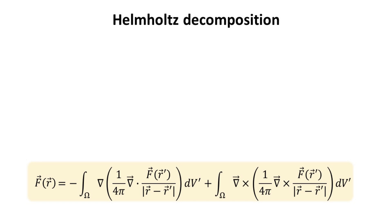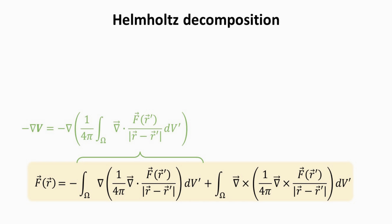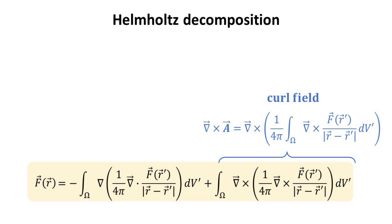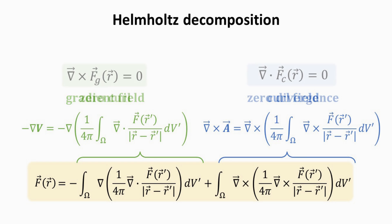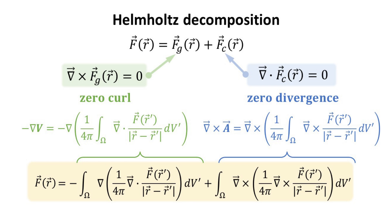The simplification comes in the conceptual understanding. First, we identify that the first integral can be written as the gradient of a scalar field V, called the potential. Next, the second integral can be written as the curl of a vector field A, called the vector potential. So we have basically shown that a general vector field can be expressed as a sum of a gradient field and a curl field — this is the major conceptual advancement. A gradient field has zero curl, and the curl field has zero divergence. Thus, we arrive at the key idea of the Helmholtz decomposition: a well-behaved vector field can be resolved into the sum of a curl-free vector field and a divergence-free vector field.